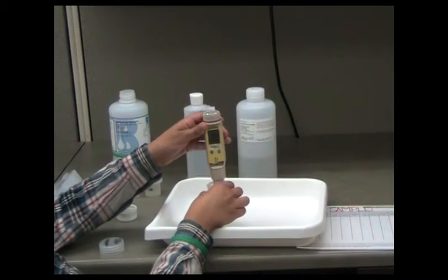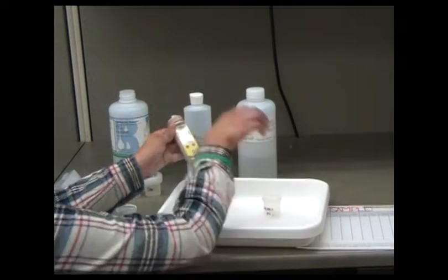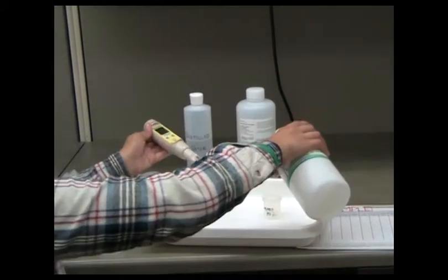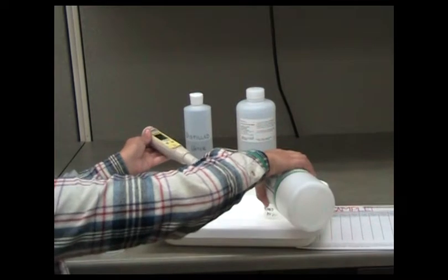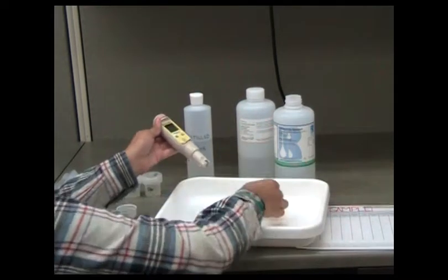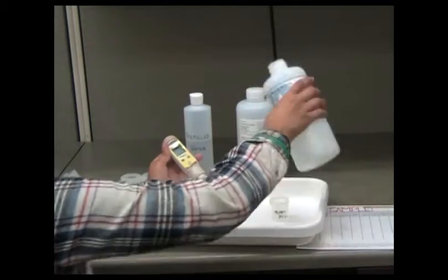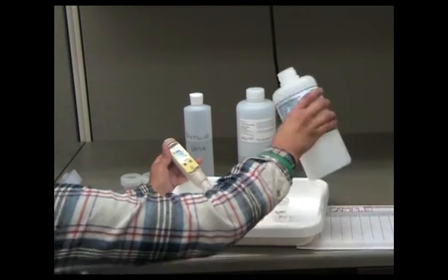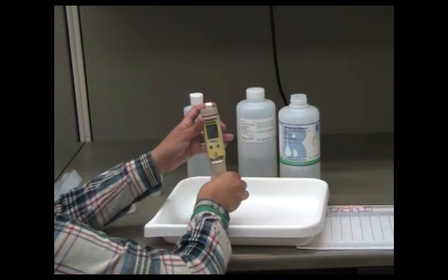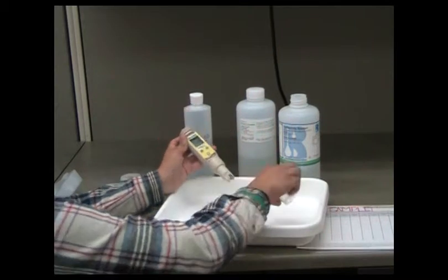Rinse the electrode in the high standard solution of 10,000 microsiemens per centimeter. Rinse it three times in a 30-milliliter Nalgene jar and pour out the standard into the waste tray between each rinse. Fill the jar a fourth time and submerge the probe in the solution.